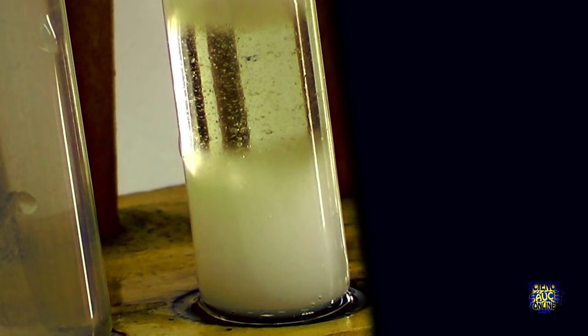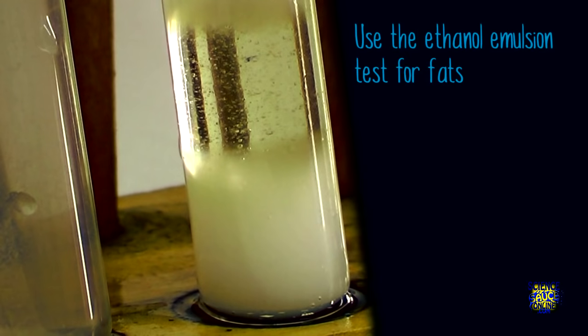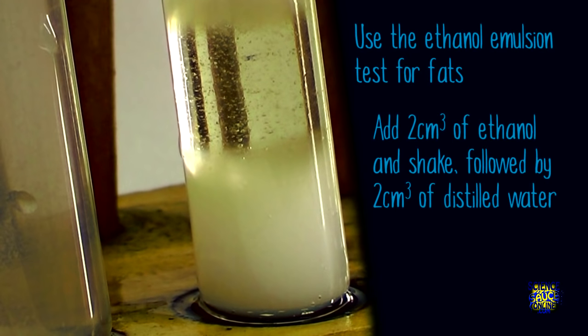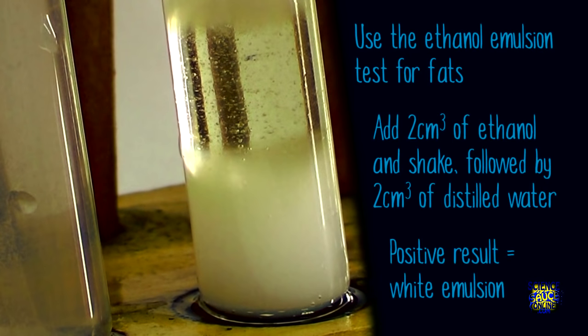To summarize, we use the ethanol emulsion test for the presence of fats. Add two centimeters cubed of ethanol and then shake followed by two centimeters cubed of distilled water. A white emulsion forms if fats are present.